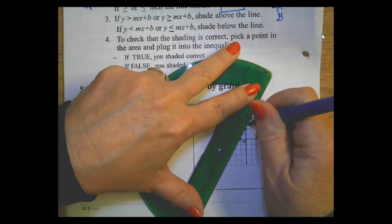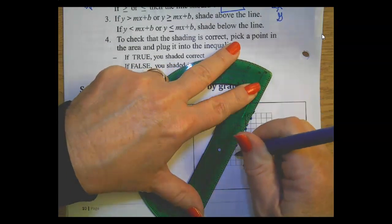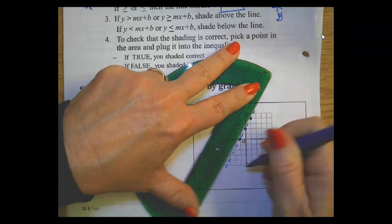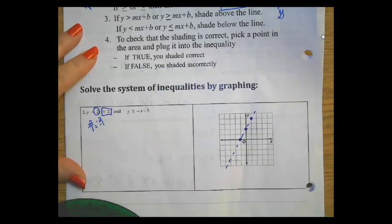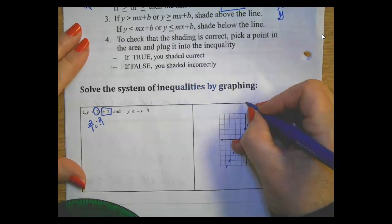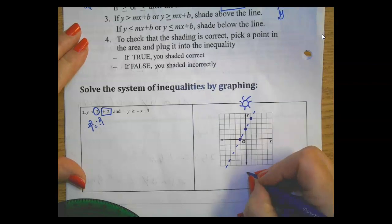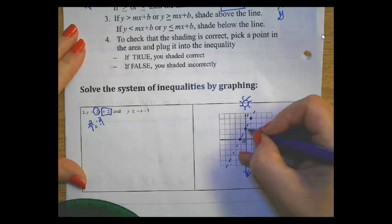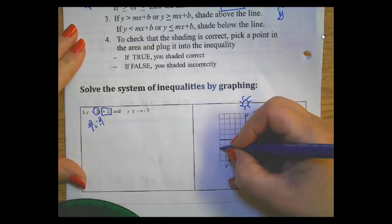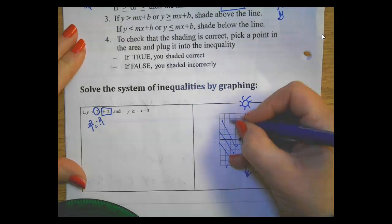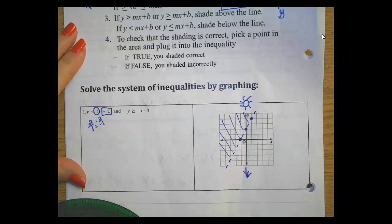I'm going to use a straight edge because that's important, and I need a dotted line because of that inequality sign. And it says less than, so if this is my sunshine up here and down here is my grass, I'm going to shade down here.